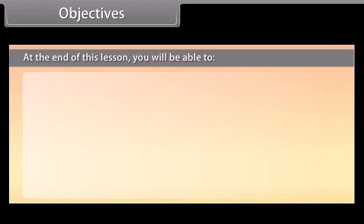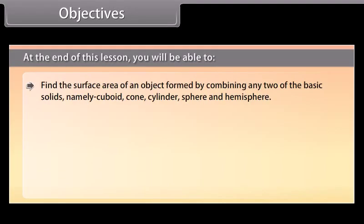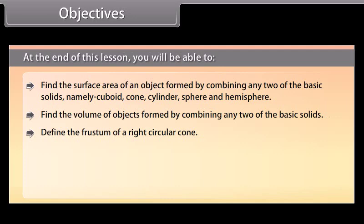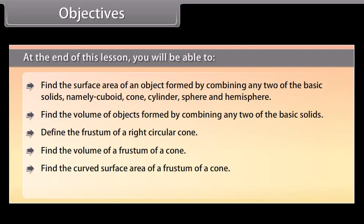At the end of this lesson, you'll be able to: find the surface area of an object formed by combining any two of the basic solids — namely cuboid, cone, cylinder, sphere, and hemisphere. Find the volume of objects formed by combining any two of the basic solids. Define the frustum of a right circular cone. Find the volume, curved surface area, and total surface area of a frustum of a cone.